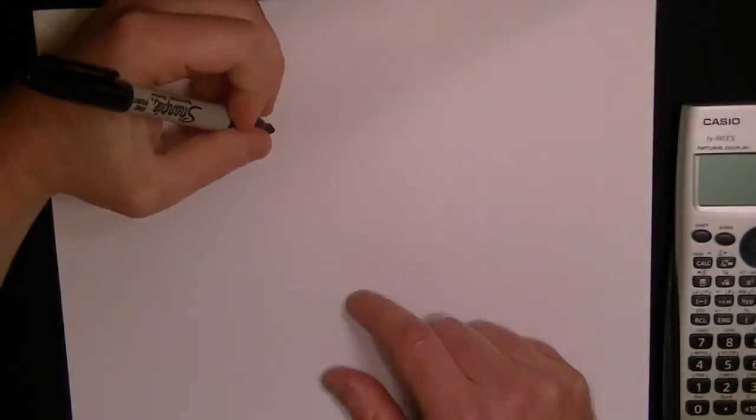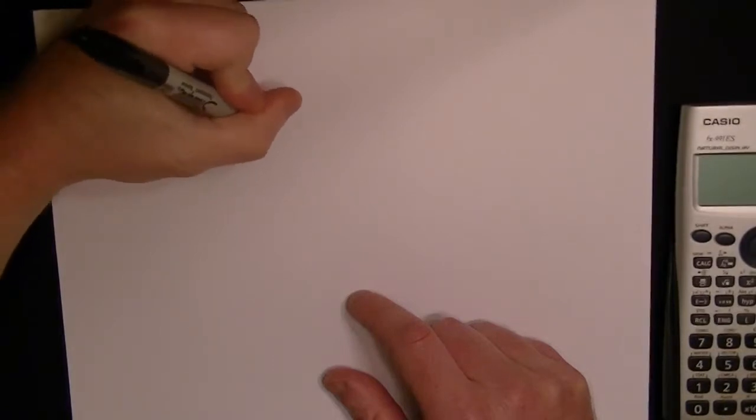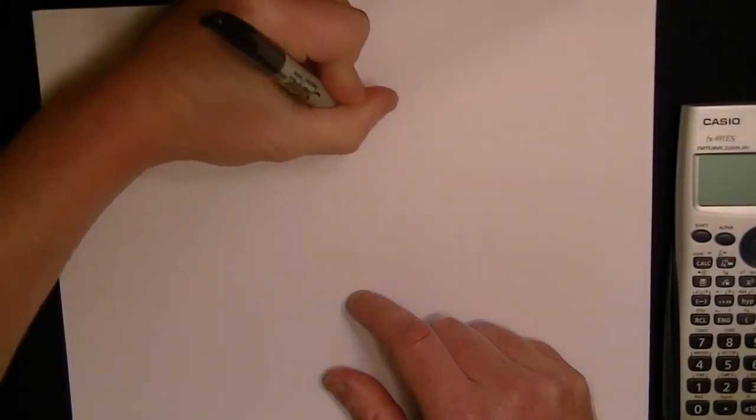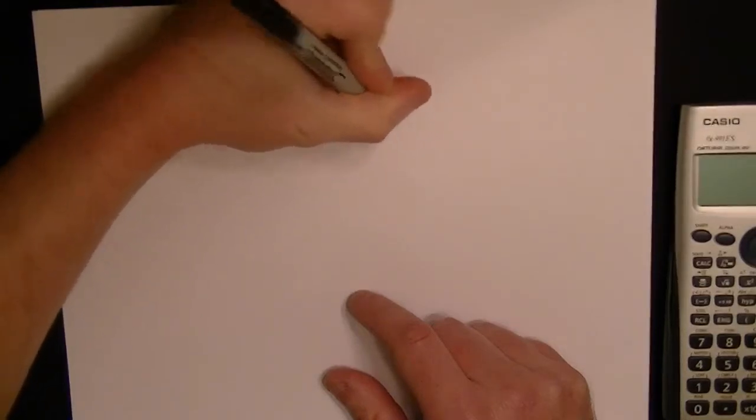Okay, we want to find the median of a data set. So the data set is 5, 7, 5, 5, 5, 5.